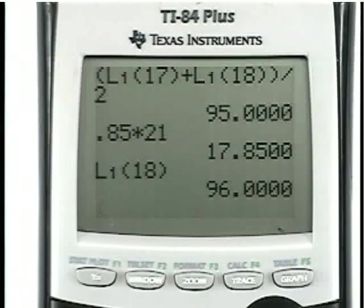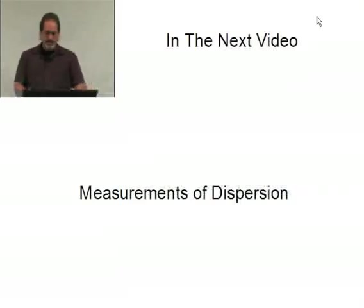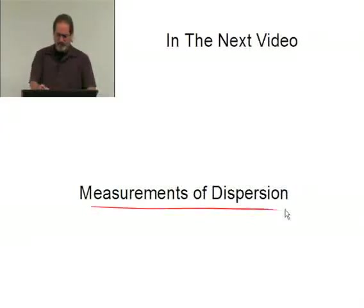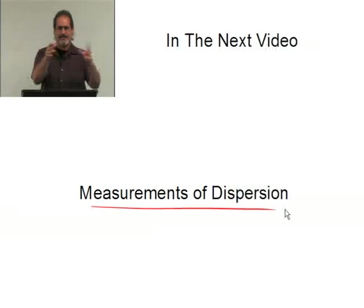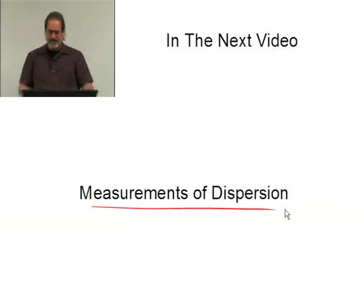Okay, that's all that we can really do with a calculator. In the next section, we're going to take a look at measurements of dispersion, which is how data is spread out. Now that we've concluded measurements of location and position, where data is in the number line, we'll talk about how data is spread out. See you in the next section.